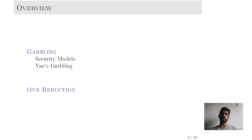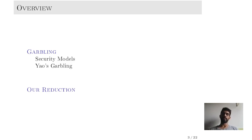This is the overview of our talk. First, we will make ourselves familiar with the various security models and, most importantly, with yaw-scarbling. In the second part, we will talk about our reduction. We will keep it informal and explain things on a very high level.